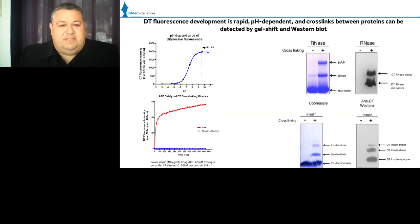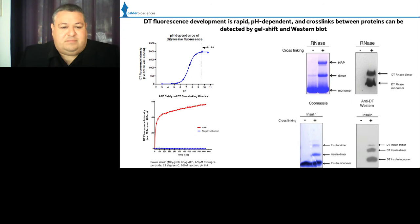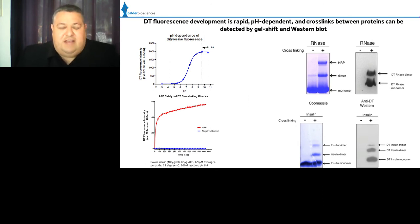The dityrosine bond has specific properties in that it's fluorescent at specific excitation and emission wavelengths. The pH dependence of that fluorescence enables tracking of dityrosine bond formation even in intramolecular structures and monitoring of bond formation in real time. The reaction is fast, on the second timescale. Because the bond is irreversible, it enables analysis of intermolecular cross-links by gel shift analysis under denaturing and reducing conditions, trackable on Coomassie gels and Western blot.